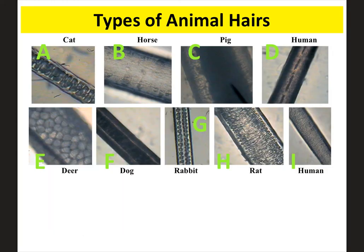This slide shows a comparison between different types of animal hairs alongside human hairs. You would typically see a larger medulla and color concentrated near the medulla in animal hairs, while in humans the color is more spread out. You can pause and look at the different types to make comparisons.